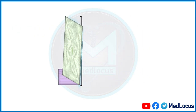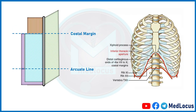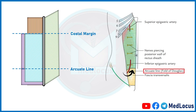Now we will learn about the costal margin and arcuate line. The costal margin is the cartilaginous arc formed by the medial margins of the cartilage of the lower three to four ribs — that is, mostly ribs seven, eight, nine, and ten. The arcuate line is a curved line present posterior to the rectus abdominis muscle, between the umbilicus and pubic symphysis. It is also called the semi-circular line of Douglas. Importantly, the arcuate line is the point where the inferior epigastric artery and vein perforate the rectus abdominis muscle.